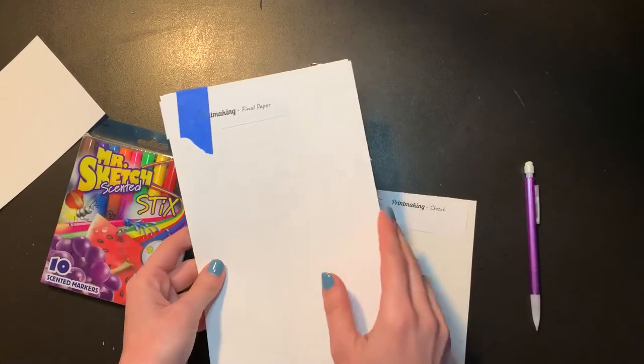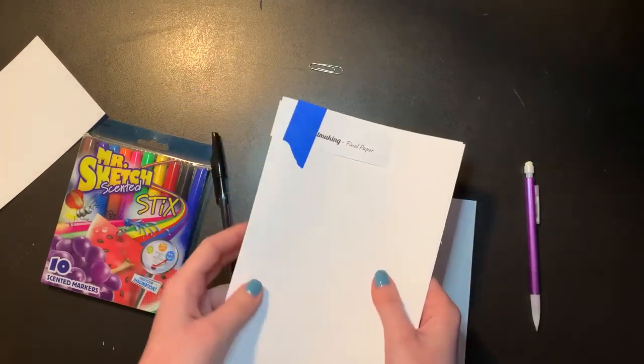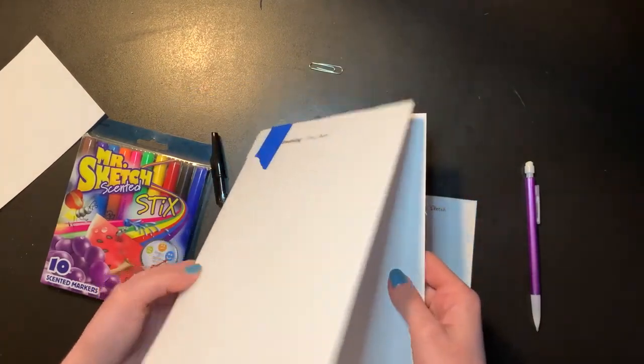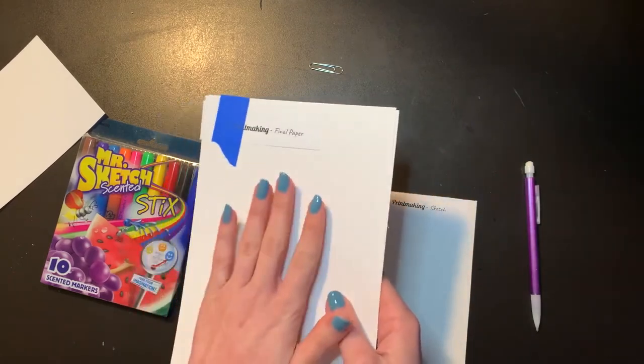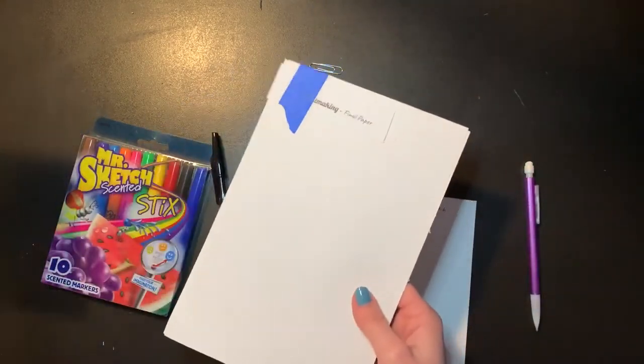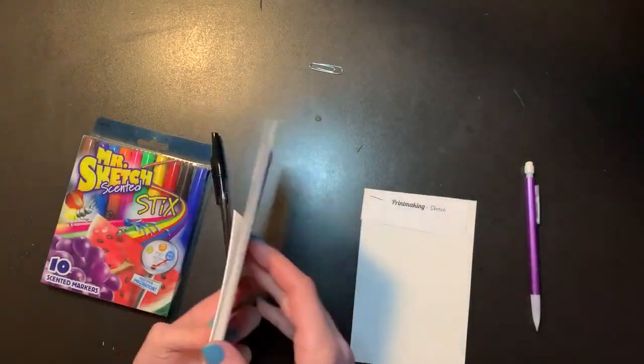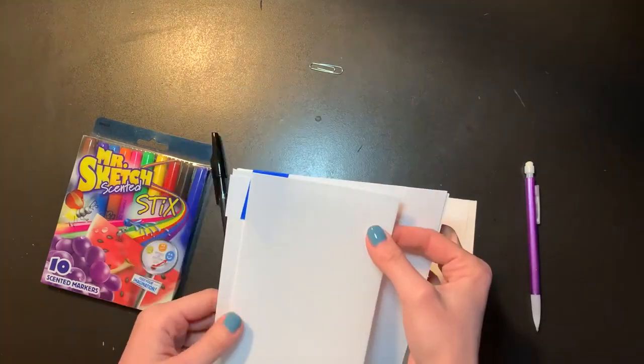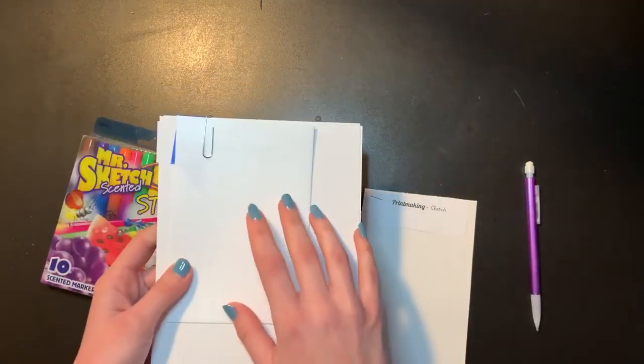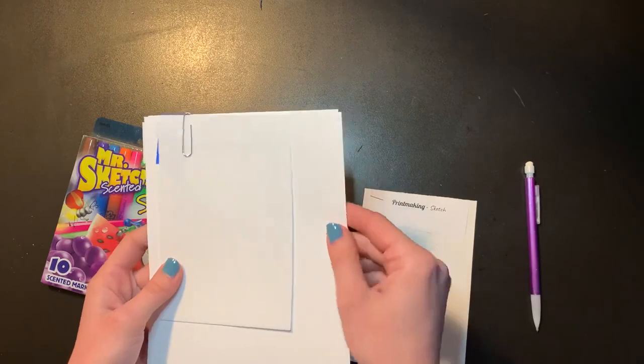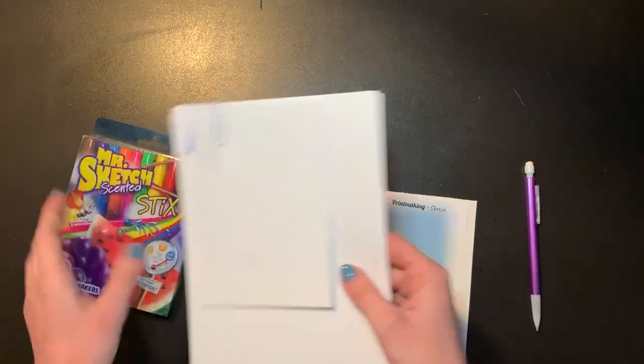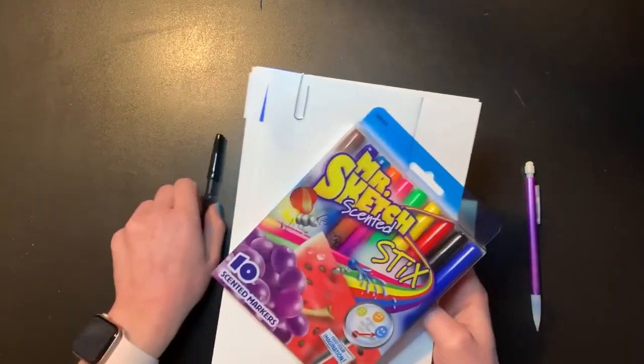You should also have two pieces of watercolor paper labeled 'printmaking final.' These are what we're actually going to do our printing on. We have two pieces so we can make two different prints. You can even make four if you want to print on the back and front. That's all we're going to need for today. I'm going to save my styrofoam plate and final papers for next week, along with my markers and pen.